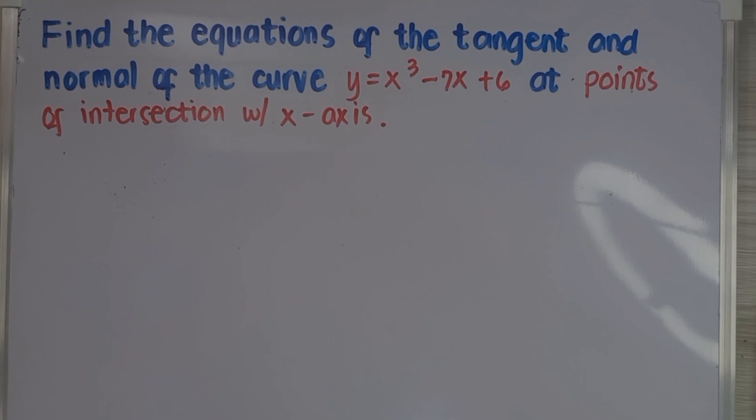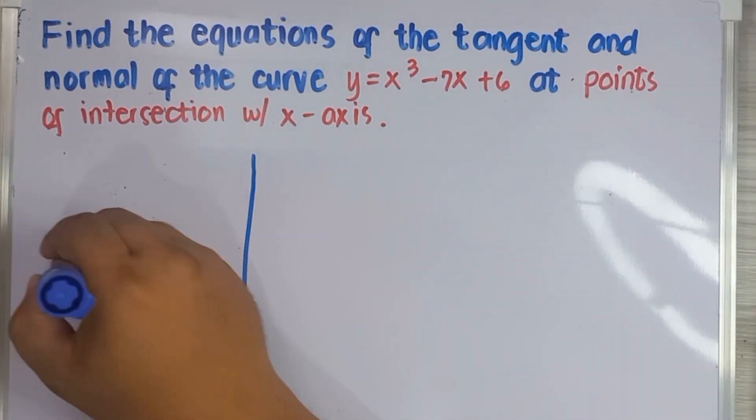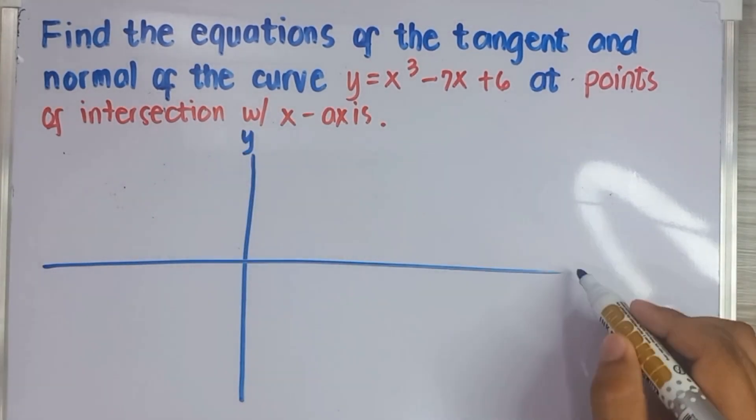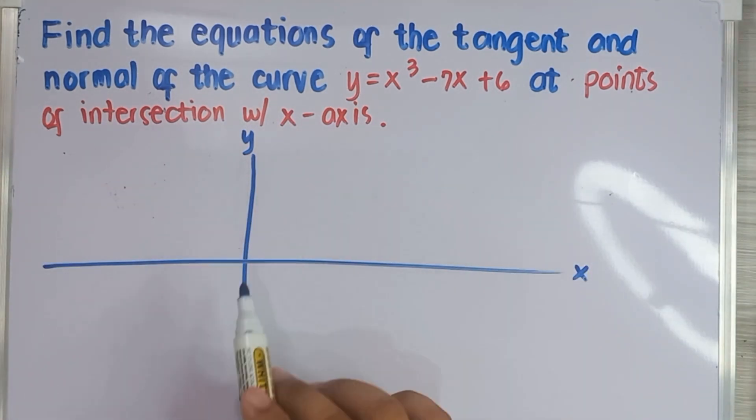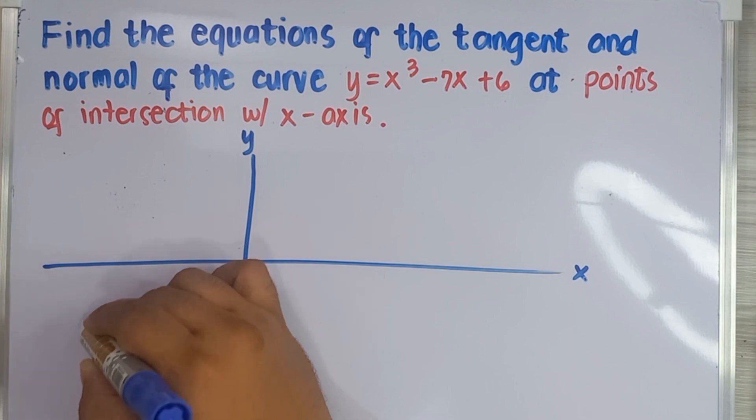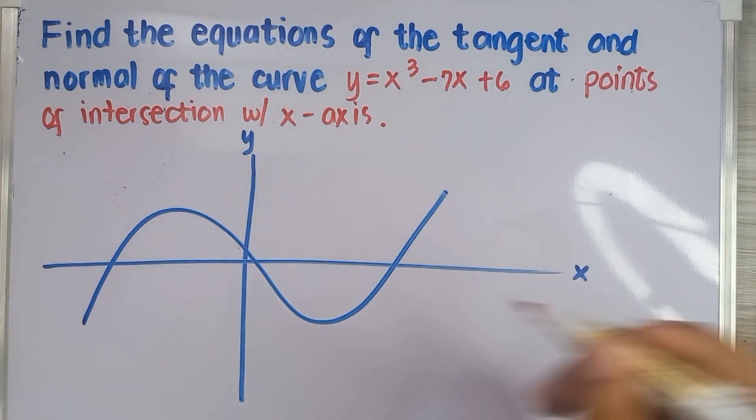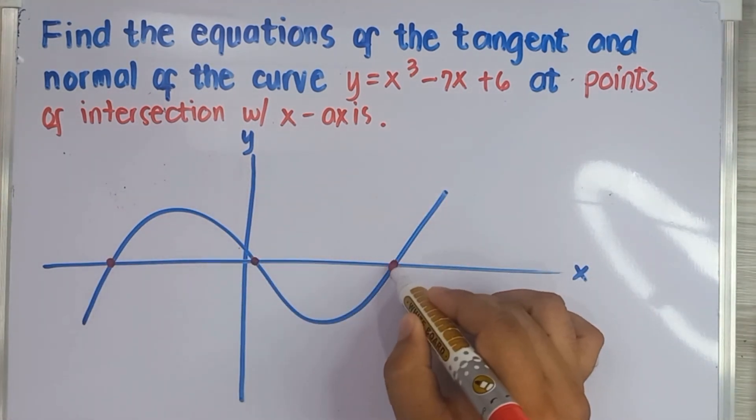Let's try this more complicated problem: to get the equations of tangent and normals of the given curve y = x³ - 7x + 6 at points of intersection with x-axis. Since the highest degree of x is 3, we can assume that the curve intersects the x-axis three times, thus giving us three points of intersection.